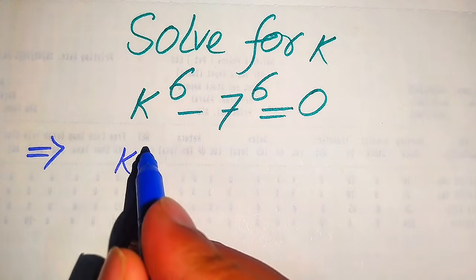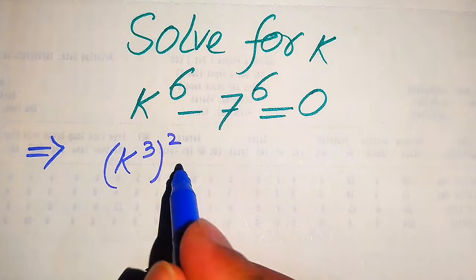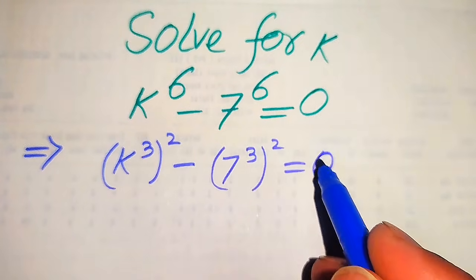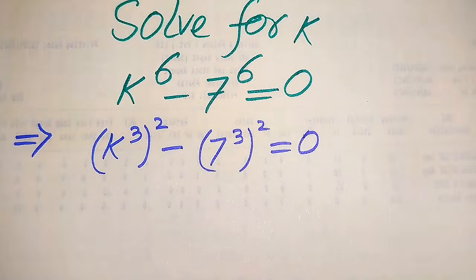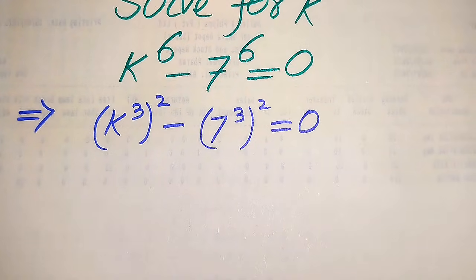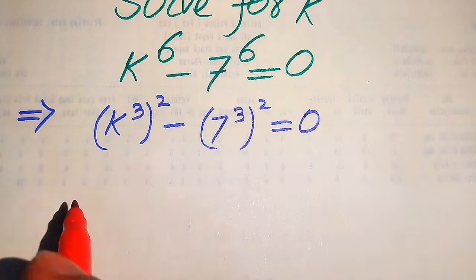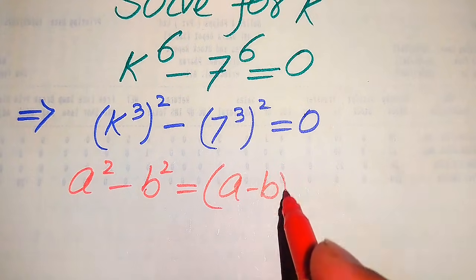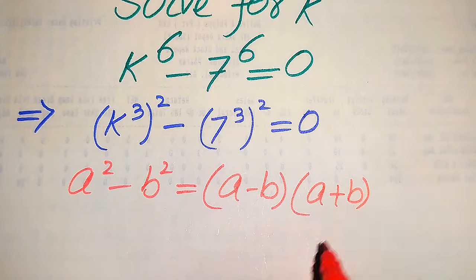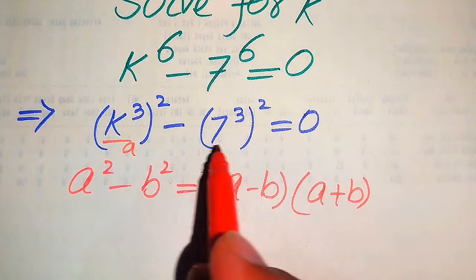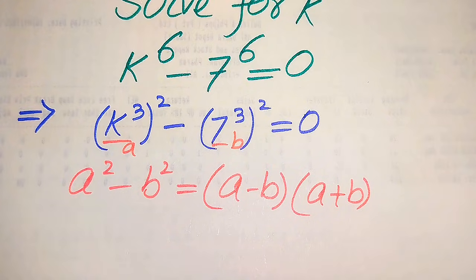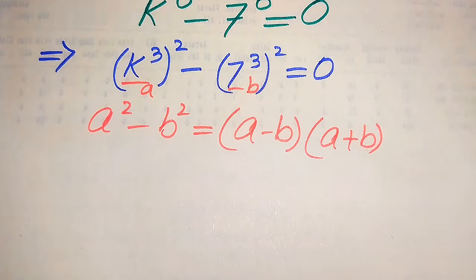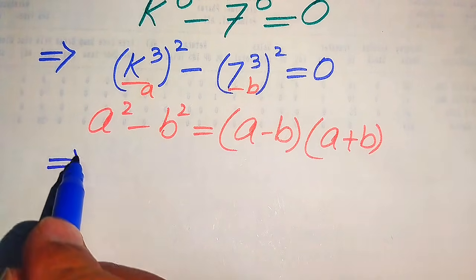The very first thing we are going to do is rewrite this equation. We write k to the power of 6 as k cubed, whole squared, minus we write 7 to the power of 6 as 7 cubed, whole squared, and this equation equals 0. In the next step, we apply the algebra formula: a squared minus b squared equals a minus b times a plus b.